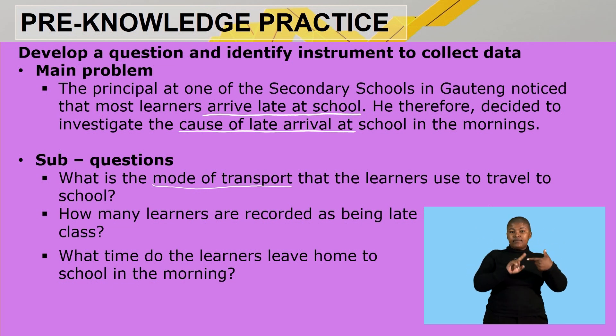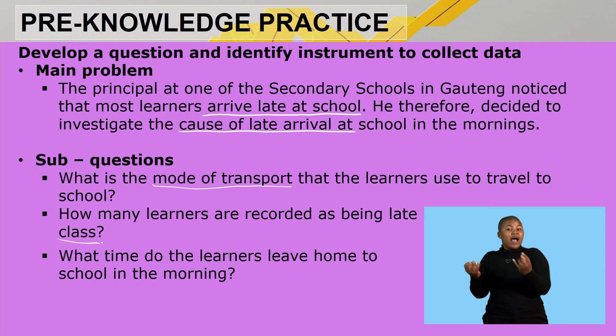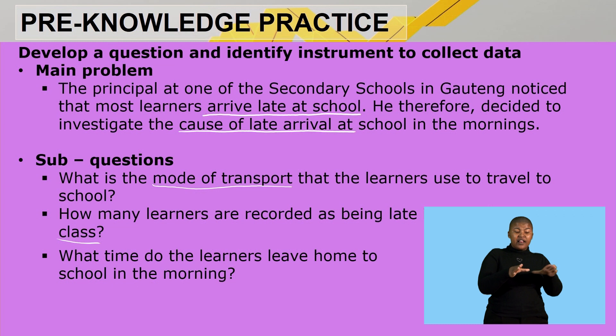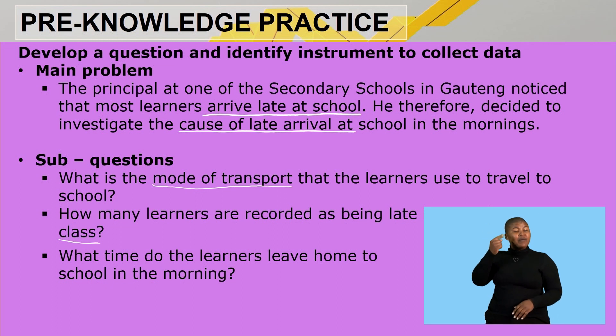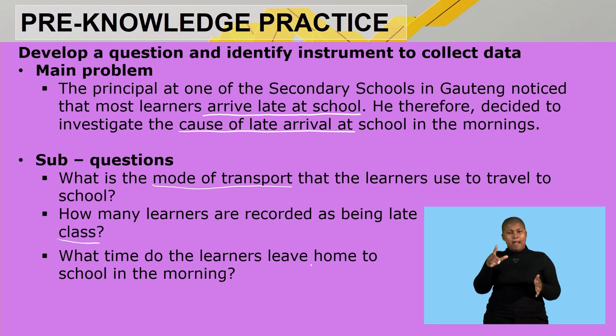A second sub-question could be: how many learners are recorded as being late in a week per class? The principal needs to know exactly which class and grade the late learners are in. Lastly, it could be: what time do the learners leave home for school? The main reason learners might be late could be that they leave home very late, so the principal should encourage parents to allow learners to leave earlier.